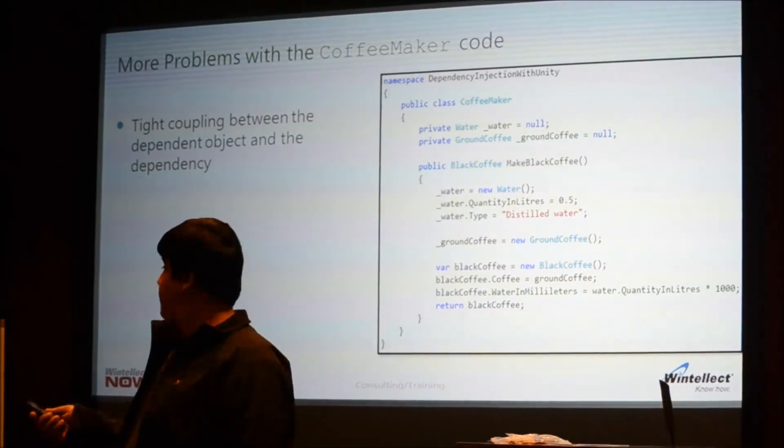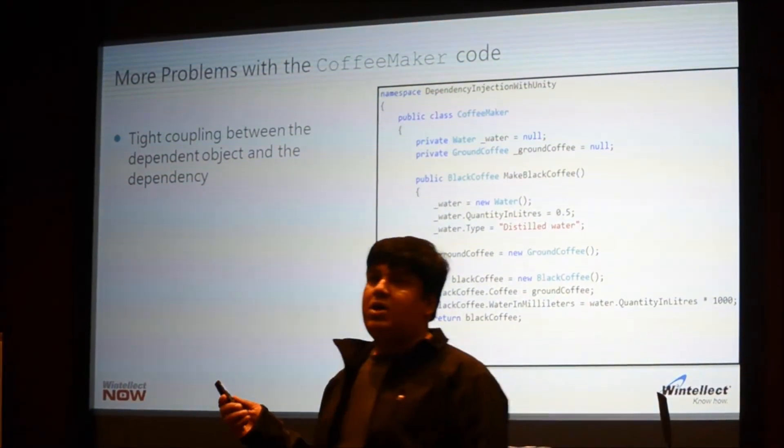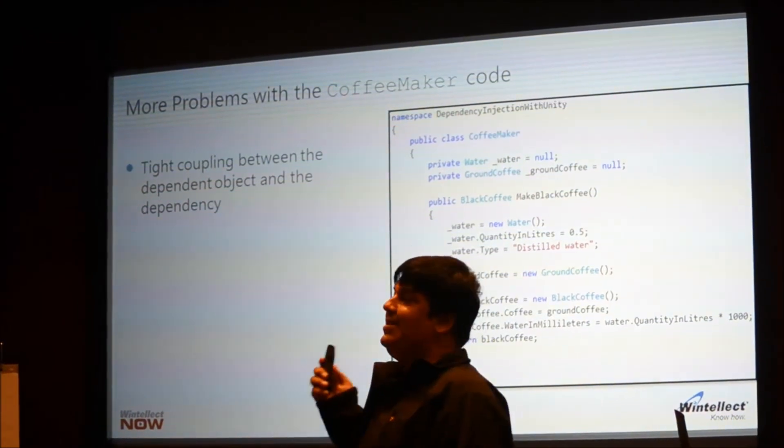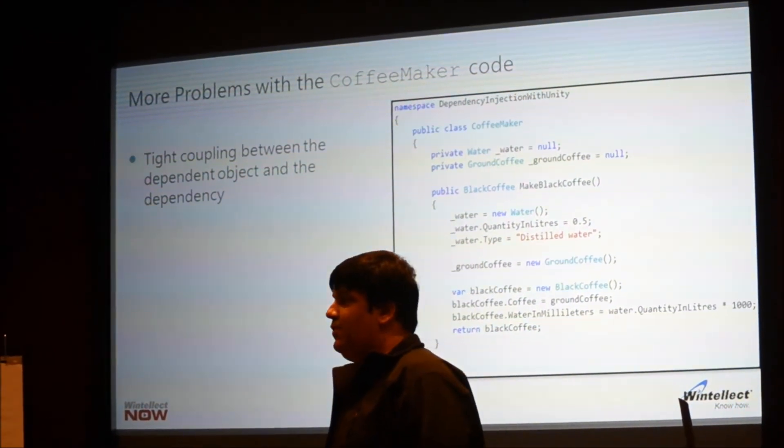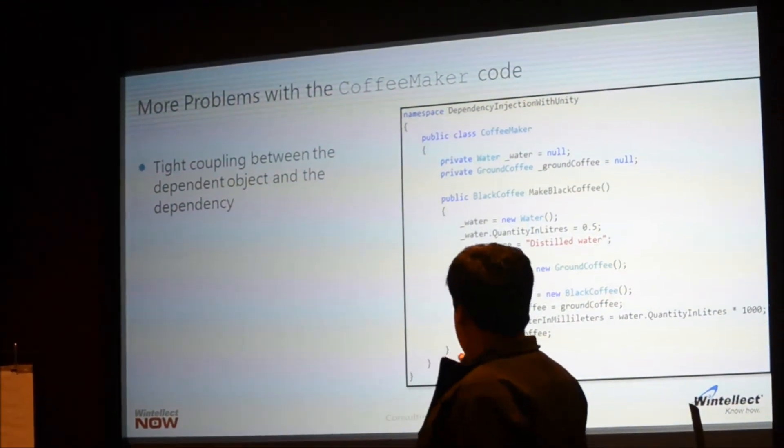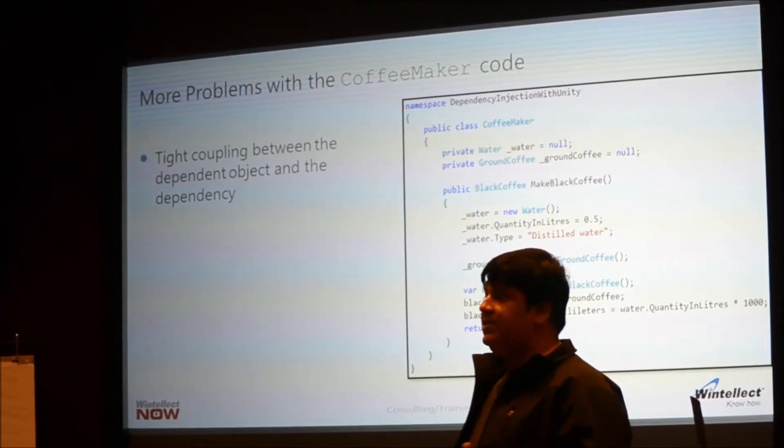I'm going to introduce two terms here. The coffee maker here is called a dependent object. And the things that it needs, the water and the ground coffee, are called the dependencies. Over here, the coffee maker is tightly coupled to the dependencies.